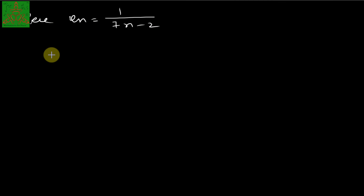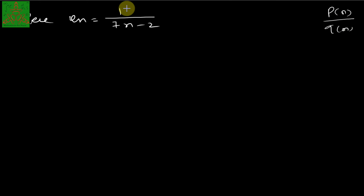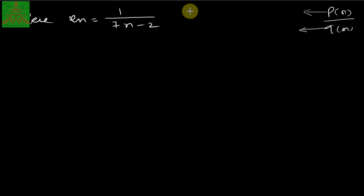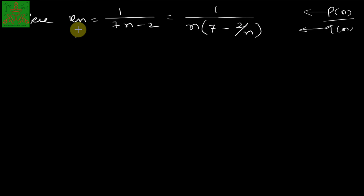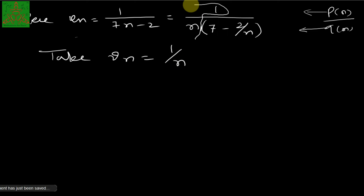Now let us solve this by Method 2. u_n = 1/(7n − 2). Whenever we have a series of the form p(n)/q(n), where p(n) and q(n) are polynomials, we factor out the maximum power of n from numerator and denominator. Here the numerator has degree zero and the denominator has degree one, so factoring out n from the denominator gives: 1/n · 1/(7 − 2/n). We take v_n = 1/n.